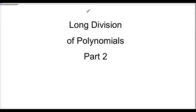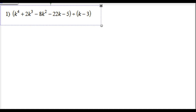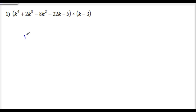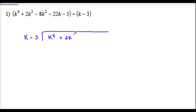This is the second part of the long division of polynomials. Let's take a look at our first example. We've got k to the fourth plus 2k cubed minus 8k squared minus 22k minus 5, and I'm going to divide k minus 3 into all of this. So I'm just going to rewrite that: k to the fourth plus 2k cubed minus 8k squared minus 22k minus 5.